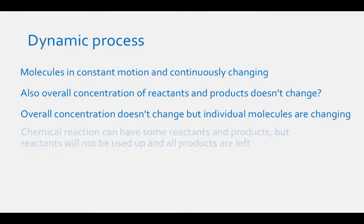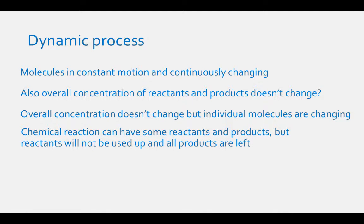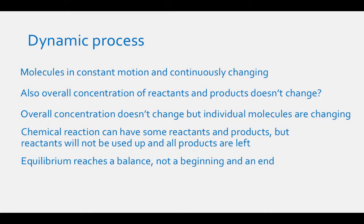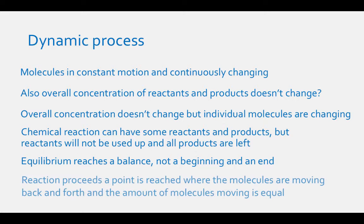Equilibrium means that a chemical reaction can have some reactants and products in its final state — it reaches a balance, and it doesn't reach a point where all the reactants are used up and all you have is products. It doesn't have a beginning and an end. As a reaction proceeds, a point is reached where even though the molecules are moving back and forth, the amount of molecules moving back and forth are equal.